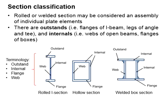The rolled and welded section may be considered as an assembly of individual plate elements. These elements are assembled together in order to improve their engineering properties without increasing the amount of steel required. Each section comprises the outstands and internals.